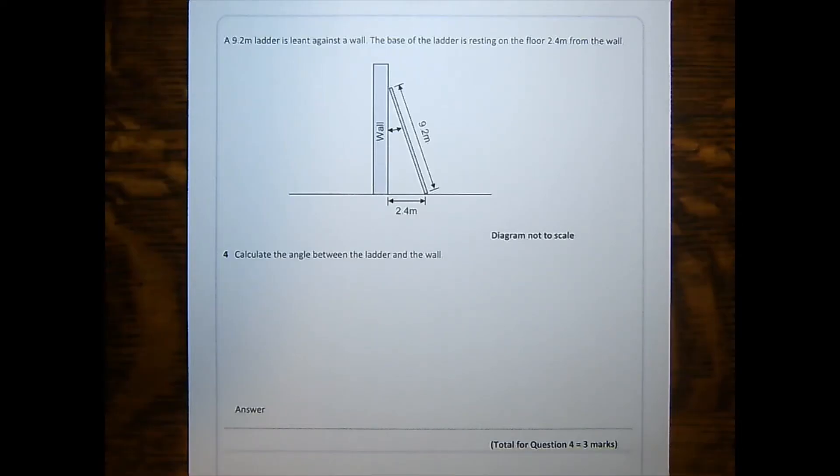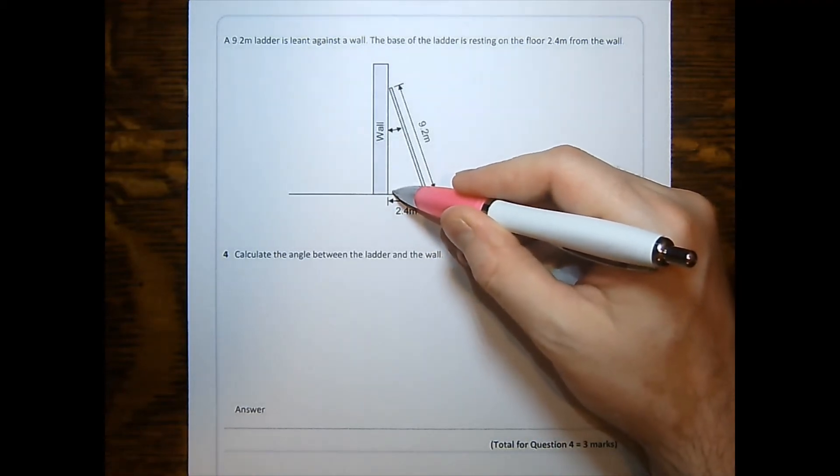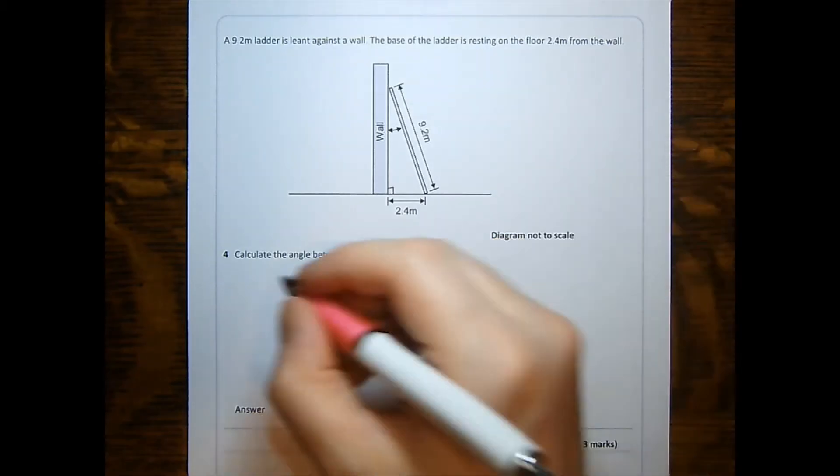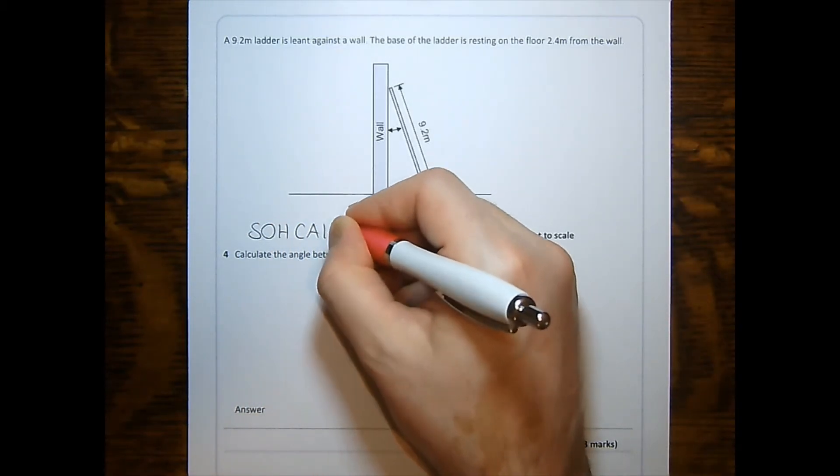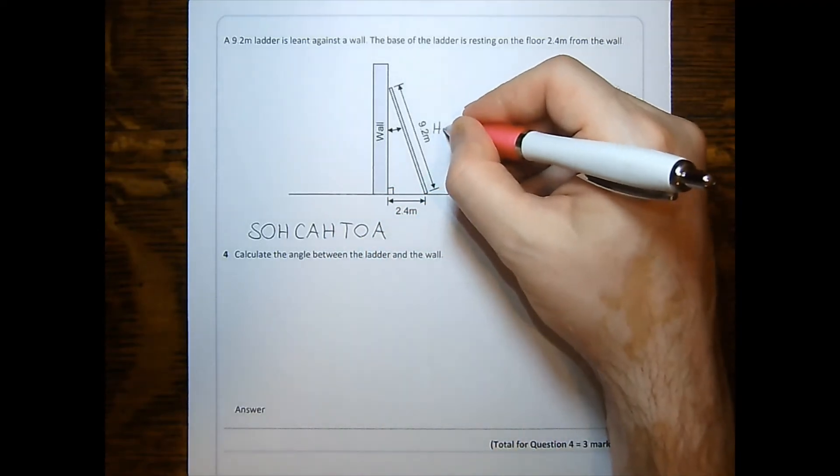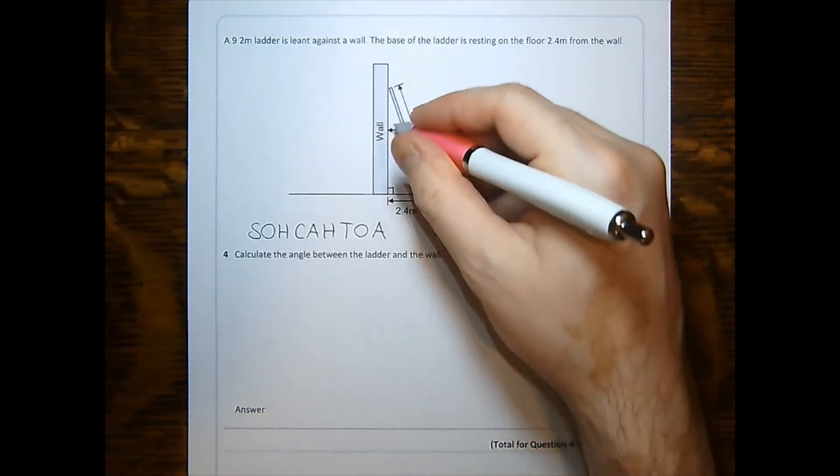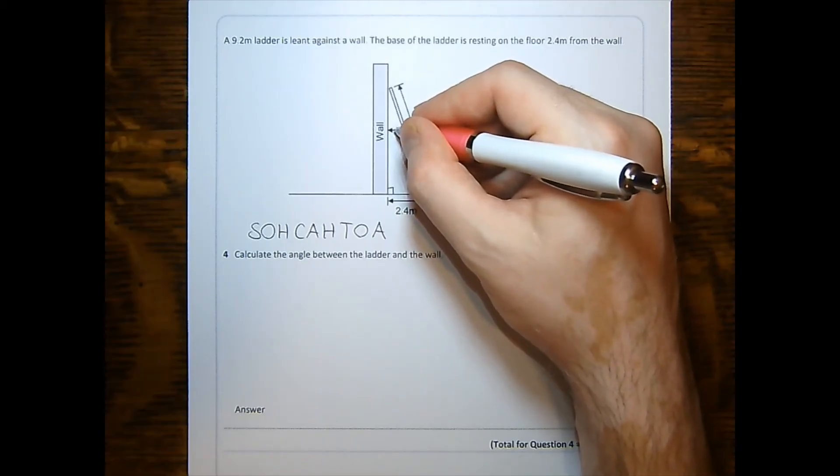Although it doesn't say in the question, we all know that a wall is perpendicular to the floor. That's common sense. So since there's a right angle, we know we're dealing with SOH CAH TOA. This side is the hypotenuse. It's opposite the right angle and it's the longest. The angle in question is at the top here between the wall and the ladder.